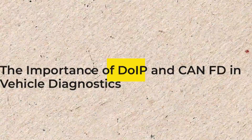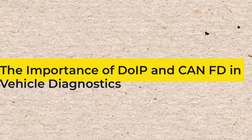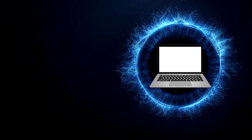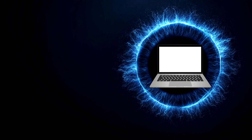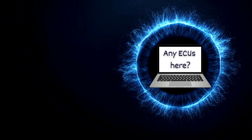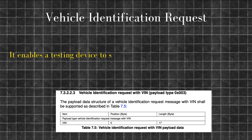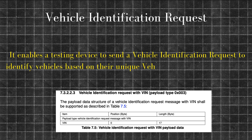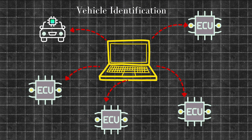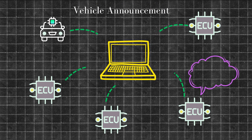So how does this car-to-laptop conversation actually happen? Let's break it down. The first thing a diagnostic tool does is shout into the digital void: 'Any ECUs here who speak IP?' This is done using something called a vehicle identification request — a multicast message sent over the network.